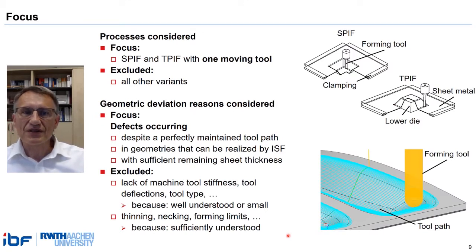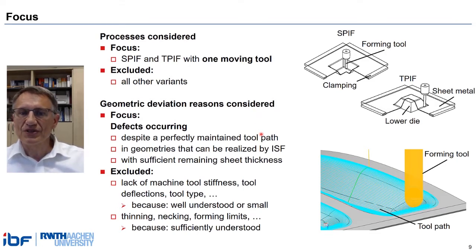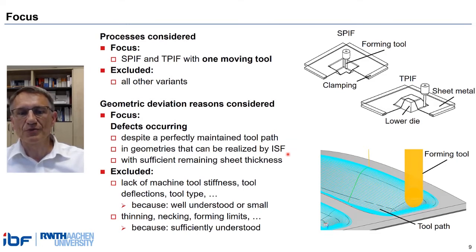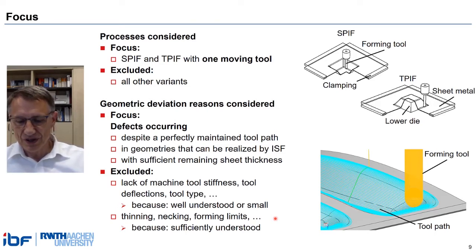Let me therefore narrow down the target for our presentation today. Firstly, we want to focus on single-point incremental forming and on two-point incremental forming with just one moving tool. Secondly, we want to limit our considerations to defects which occur even though the toolpath was perfectly maintained and even though the geometries can be realized by incremental sheet forming with sufficient remaining sheet thickness. This means we do not consider a lack of machine tool stiffness, tool deflections, etc., which are either small or can be compensated by given algorithms. And we are not considering formability limits and thinning, because we assume they are sufficiently well understood.